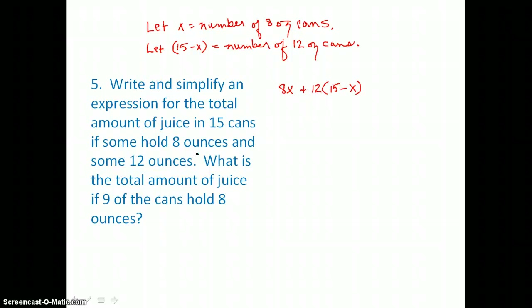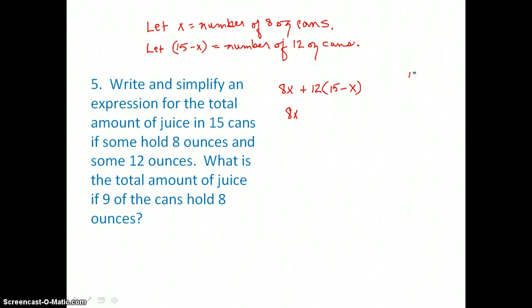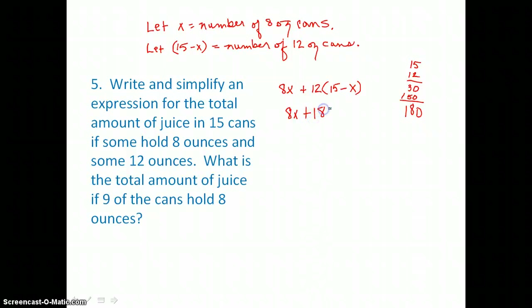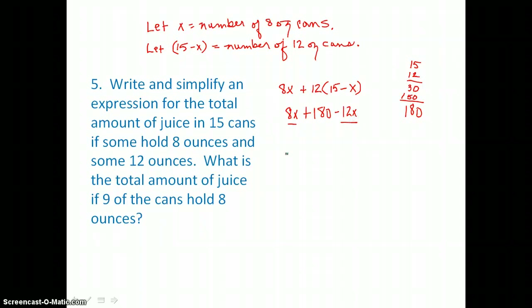This expression is not in simplest form, so we distribute and add like terms. We have 8x, then 12 times 15 is 180, and 12 times negative x is negative 12x. Adding like terms: 8x and negative 12x gives us negative 4x, since we have more negatives than positives. So our expression in simplest form is negative 4x plus 180.